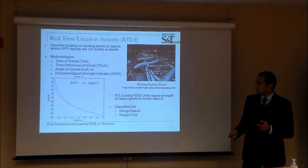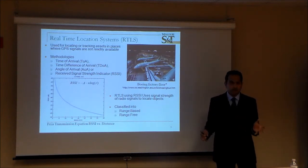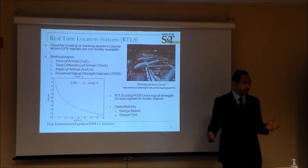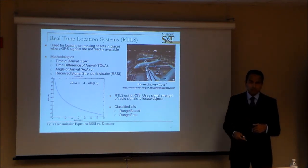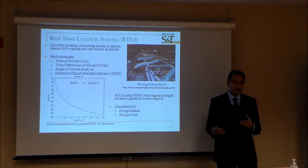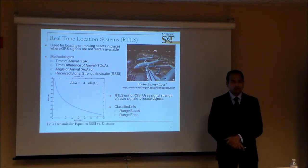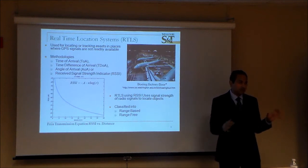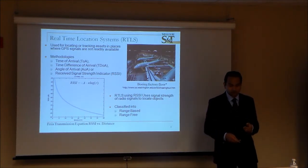Signal strength based localization is broadly classified into two methods: range-based and range-free. The range-based method estimates the distance to a transmitter from multiple receivers and uses multilateration or trilateration to find the position, relying on the Friis transmission equation in the far field. The range-free method takes an RSSI map of the area, stores it in a file, and uses fingerprinting or pattern matching to locate an unknown transmitter.